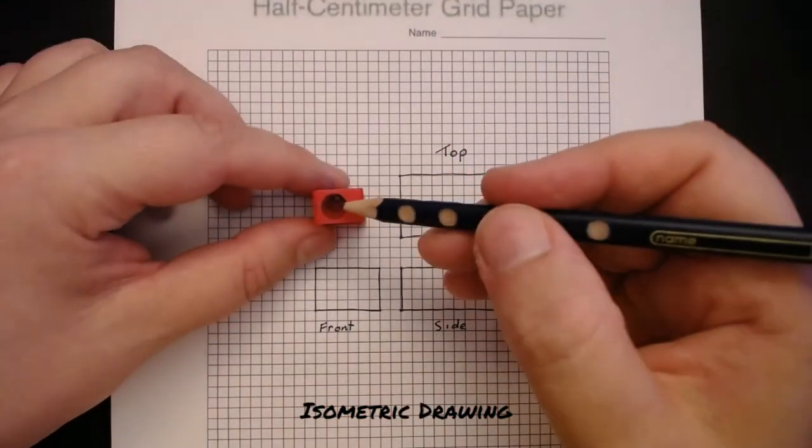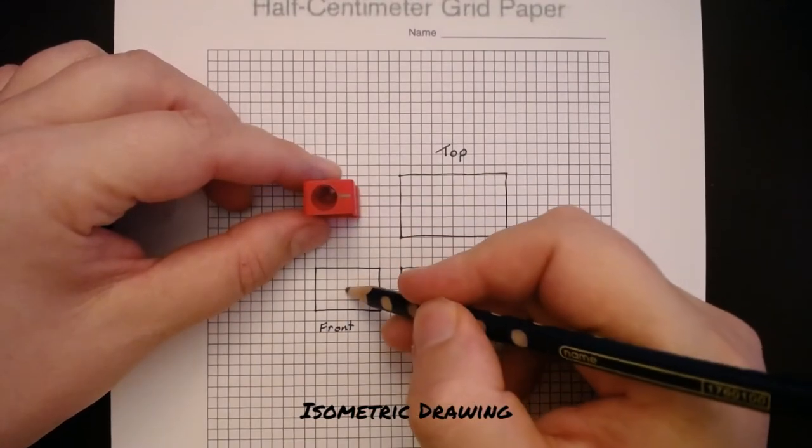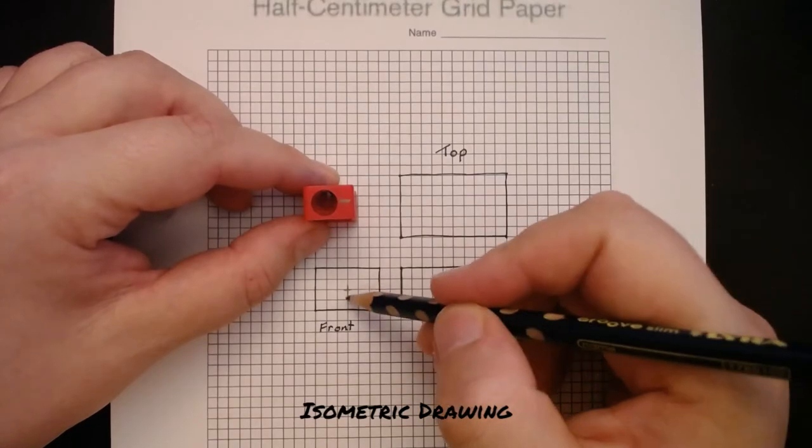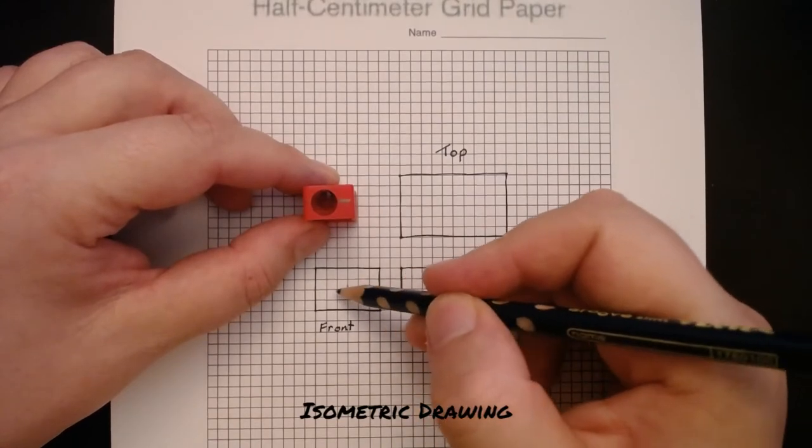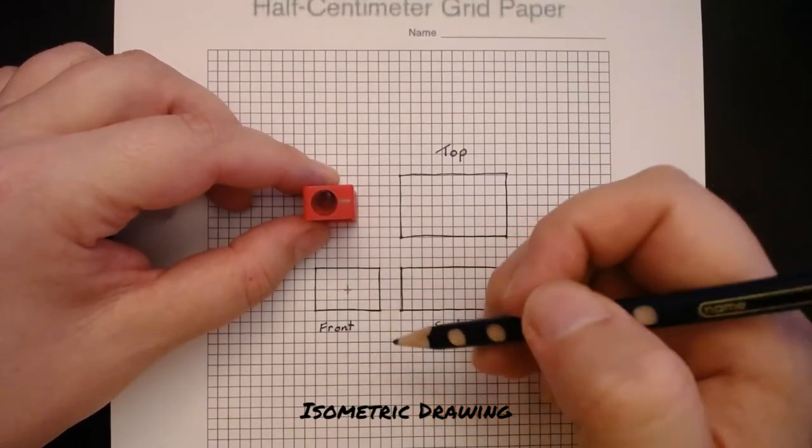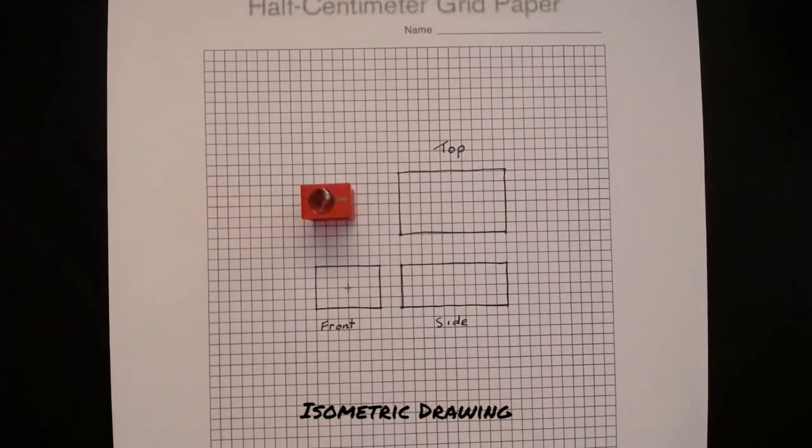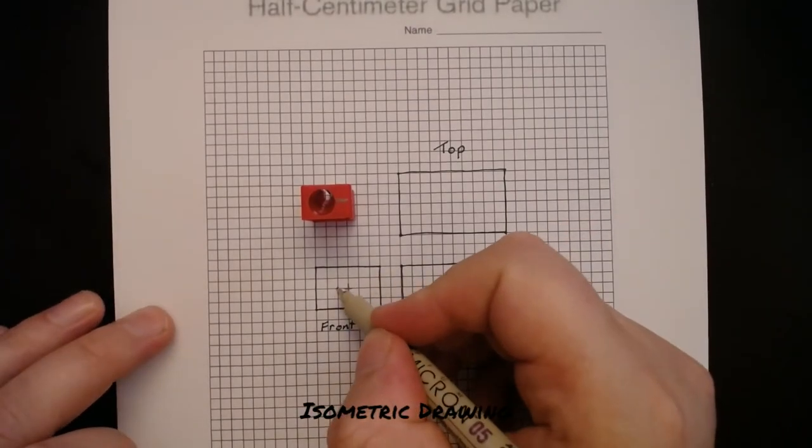We also know it's not in the middle, so it's not here. It's over to one side—not right over to one side, but ever so slightly. So I'm going to say that's one square in, so I'm going to mark the center of that circle as being here—two squares in from the side.